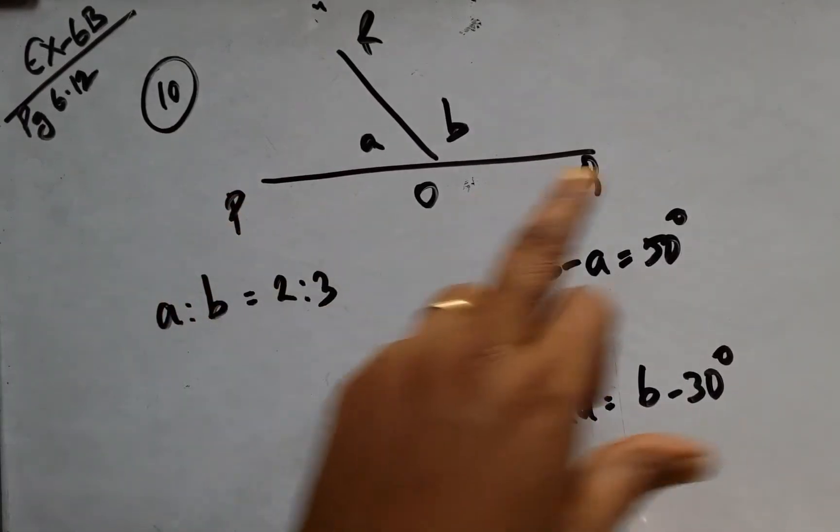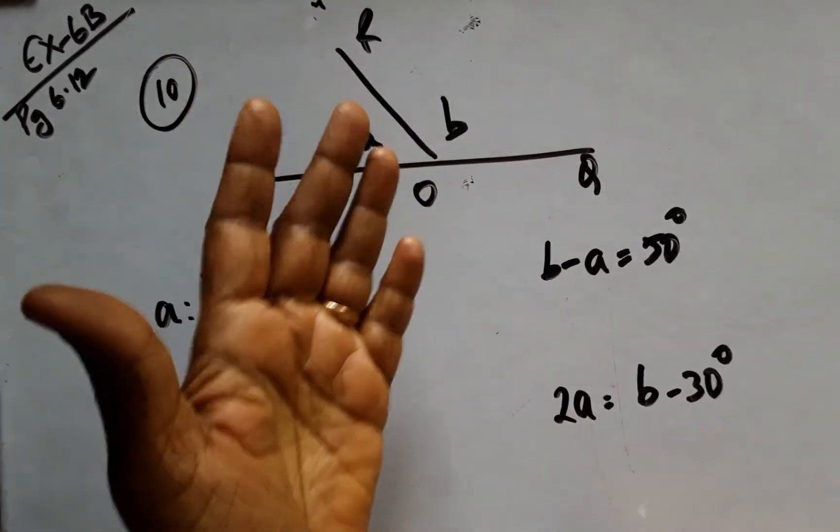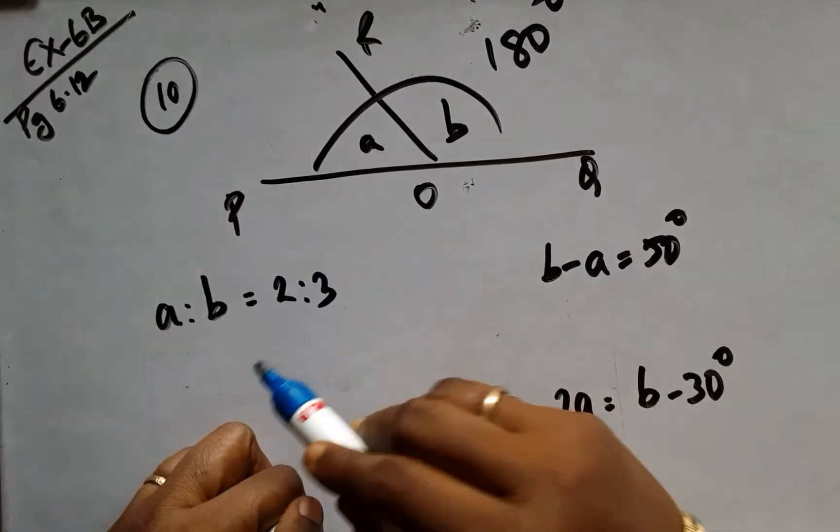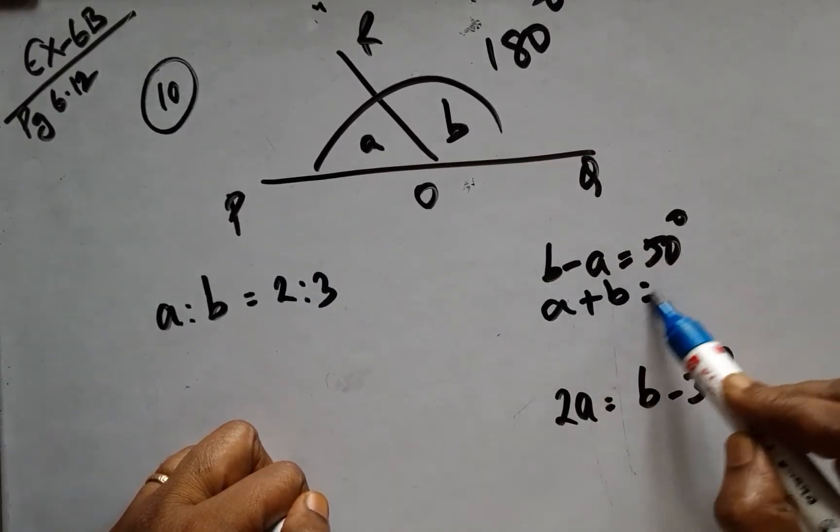POQ is a line. Obviously, A and B form a linear pair, and the sum of A and B is nothing but 180. So we know that A plus B is 180.